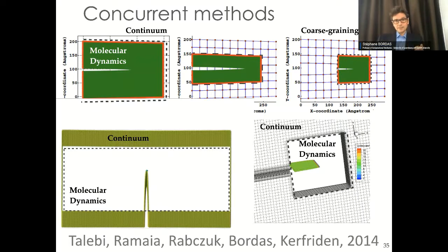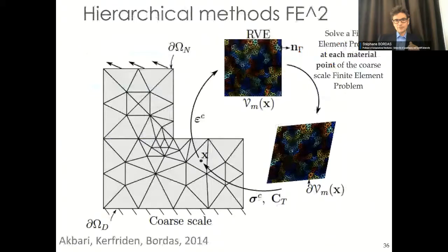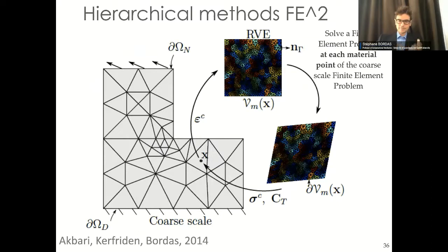The second method is called semi-concurrent or hierarchical. In those methods, you assume you have a continuous problem, and at each integration point you replace it with a so-called representative volume element (RVE), which represents the behavior of the fine scale. You apply a strain field to the RVE — transformed into displacement boundary conditions on the RVE boundary — compute the stress from the strain increment and the tangent stiffness, which you pass back to the Gauss point at the coarse scale. This is expensive to solve, but the nice point is that as the RVE evolves — fractures initiate and propagate inside the RVE — this is taken into account at the coarse scale as well.